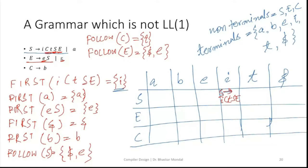The next production rule is S to A. FIRST of A is A, so we will have the entry S to A here. The next production rule is E to e S. FIRST of this body is e, so we enter E to small e, S here. But we have dollar also here.